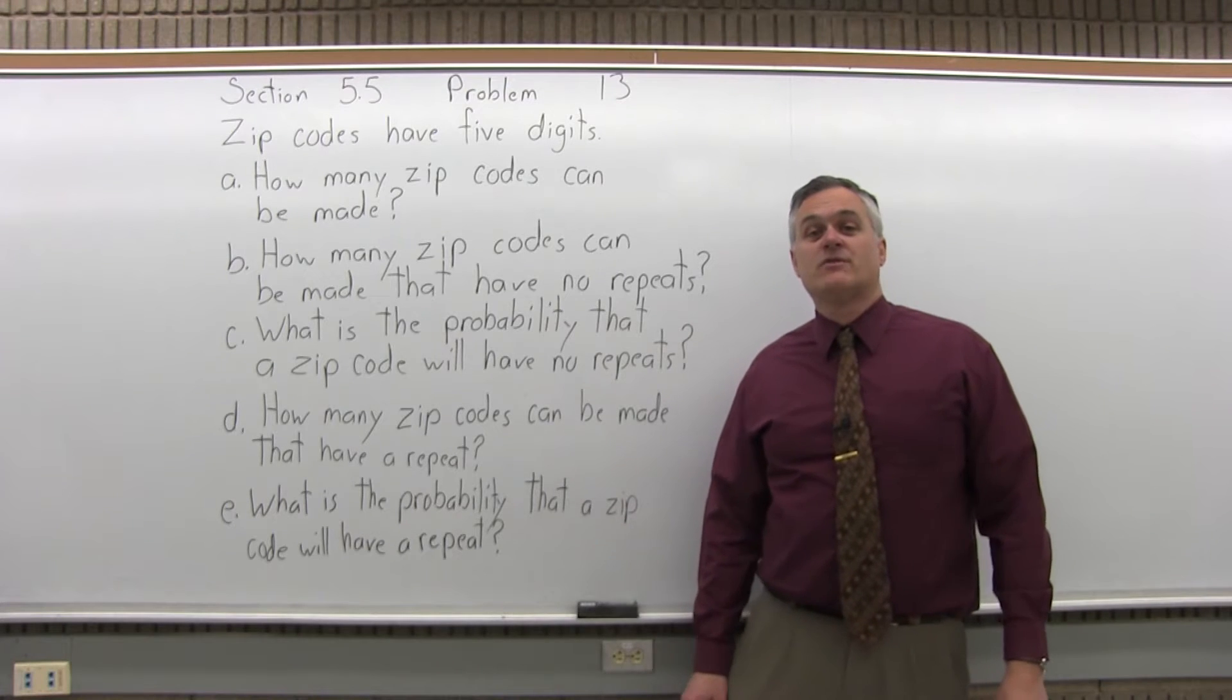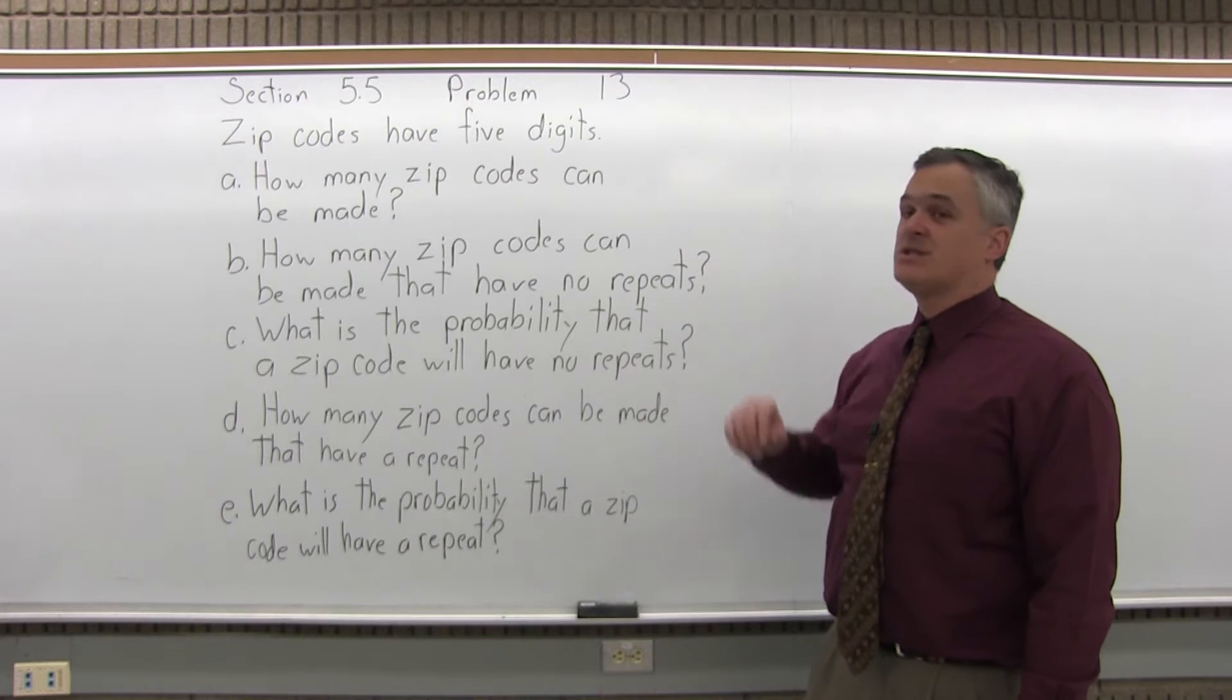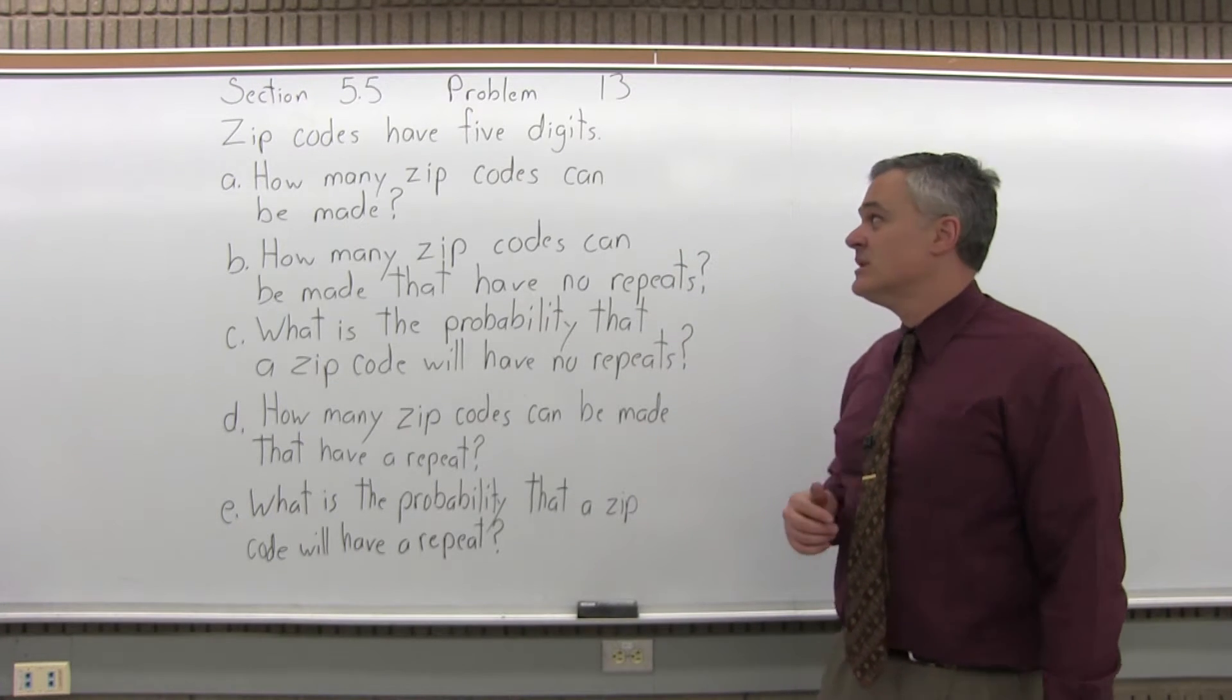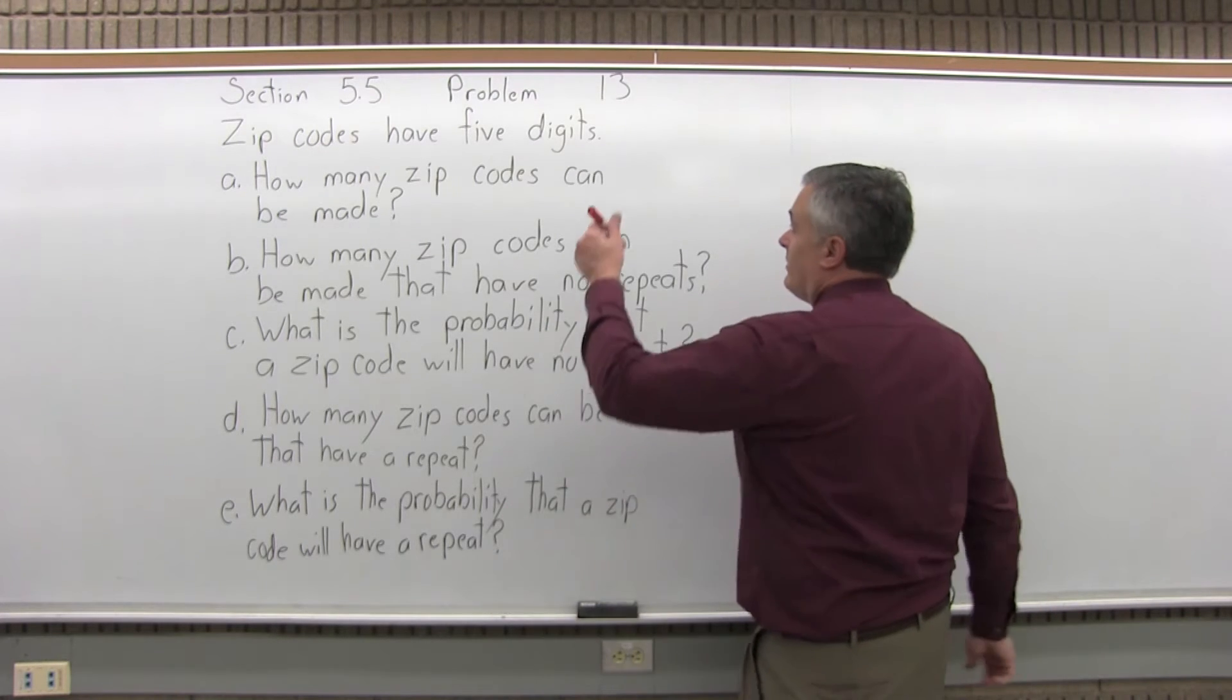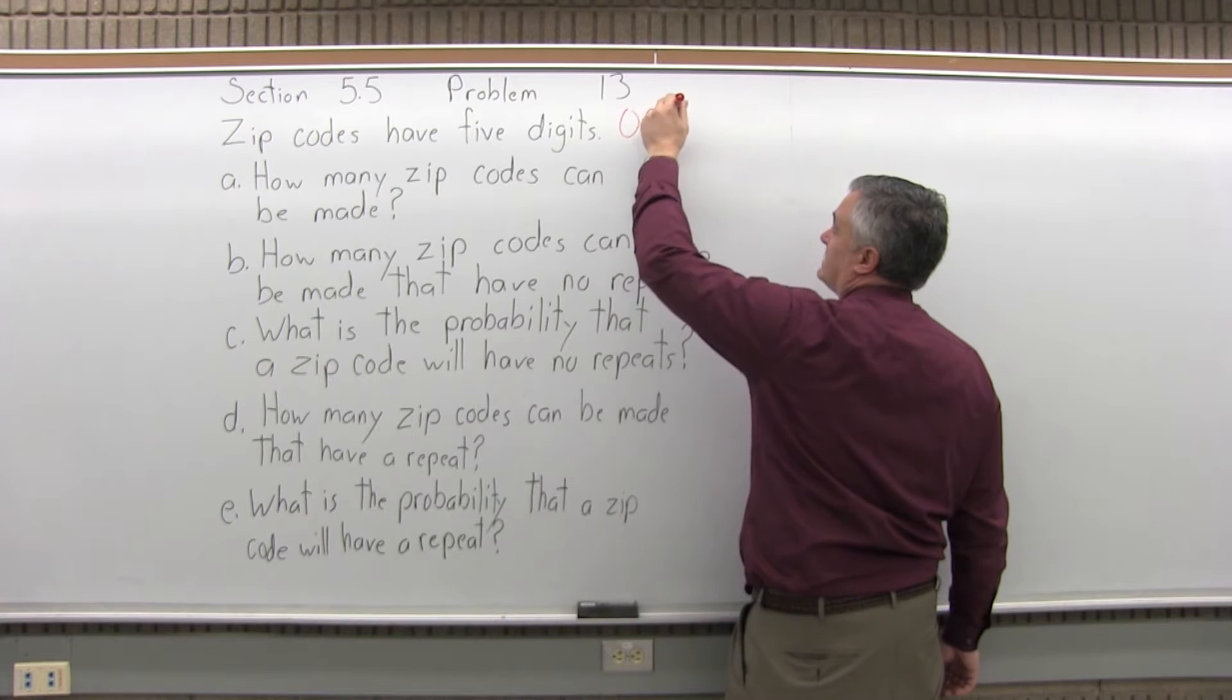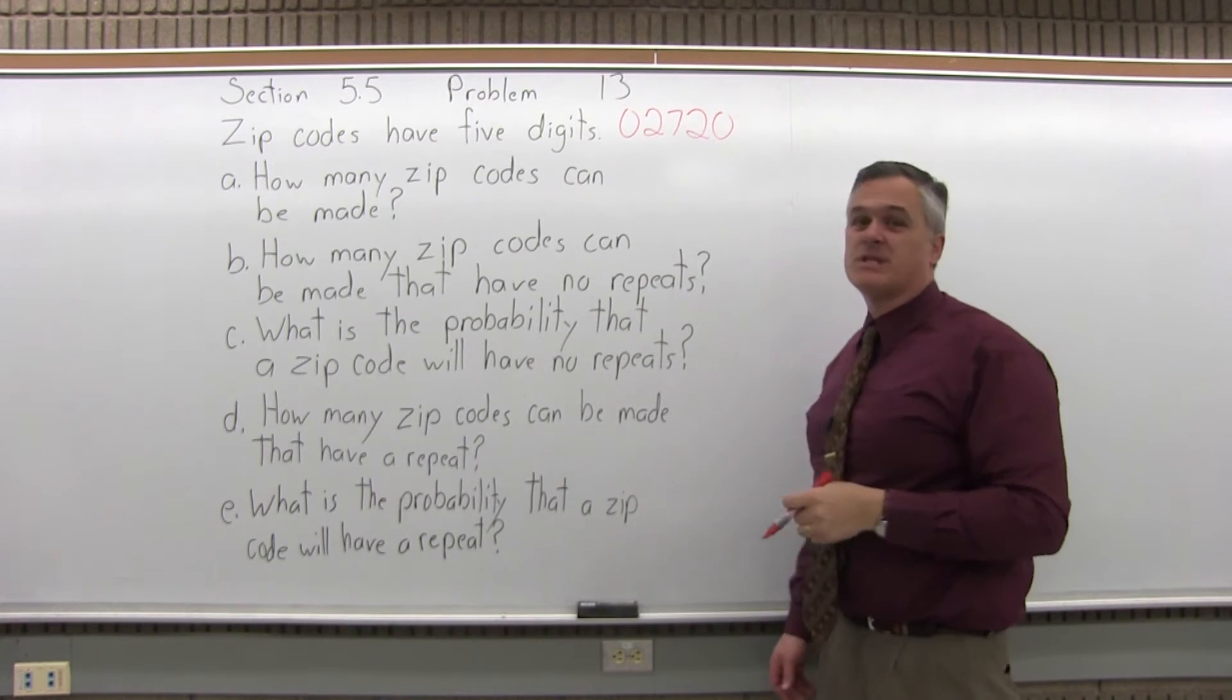This is Section 5.5, Problem number 13. So zip codes have five digits. How many zip codes can be made? So like BCC in Fall River is 02720. That's what I'm talking about, the zip code. So how many different numbers like that can you make?